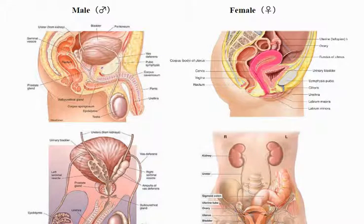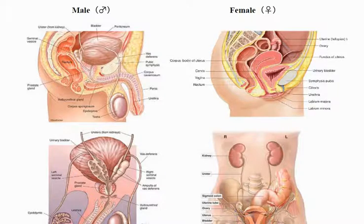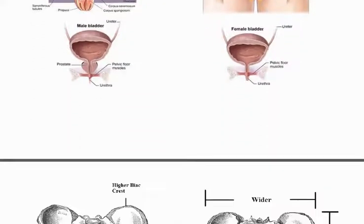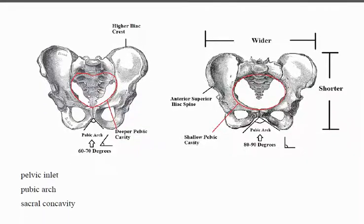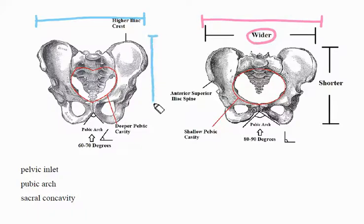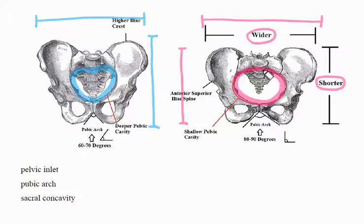The female reproductive system is not included in the urinary system, but it locates nearby it, so it is good to know. The shapes of the pelvis are different regarding the length, width, pelvic inlet, arc, and circular concavity. You may be able to notice the difference on the x-ray or CT images.